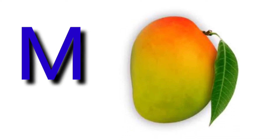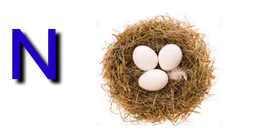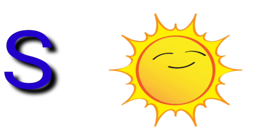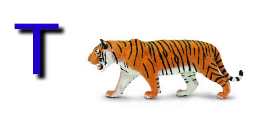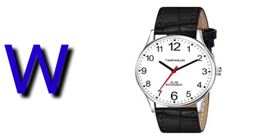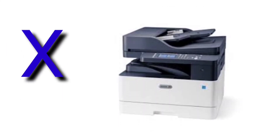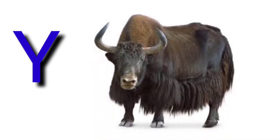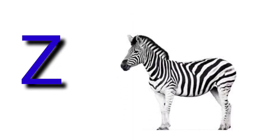M for mango, N for nest, O for orange, P for parrot, Q for quail, R for rose, S for sun, T for tiger, U for umbrella, V for van, W for watch, X for xerox, Y for yak, Z for zebra.